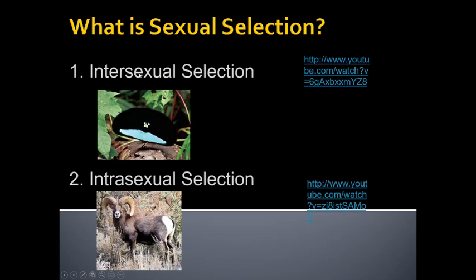Intersexual selection is when there is strong natural selection on one part of the population because the opposite sex determines what they like. Let me play a video here and then we'll talk about it some more.